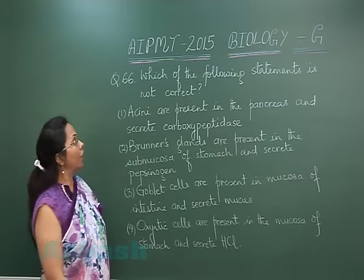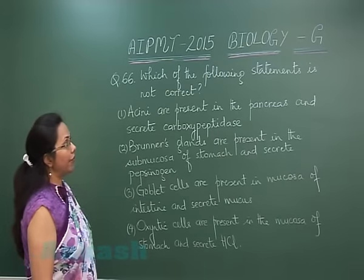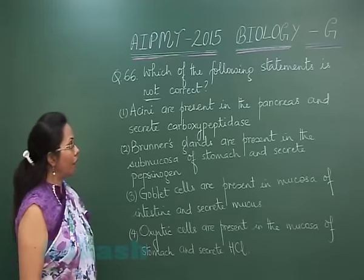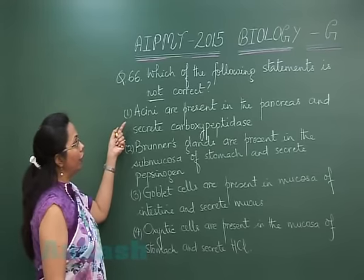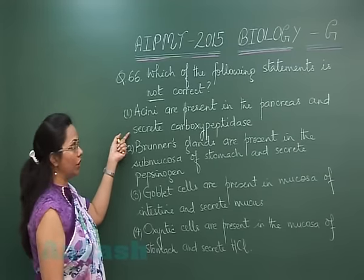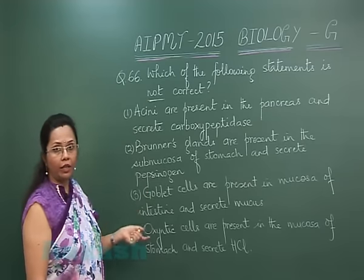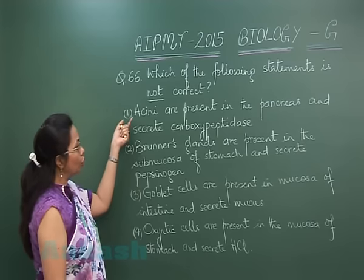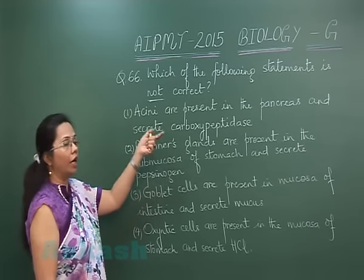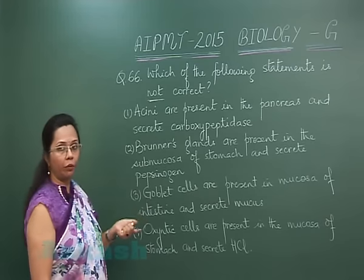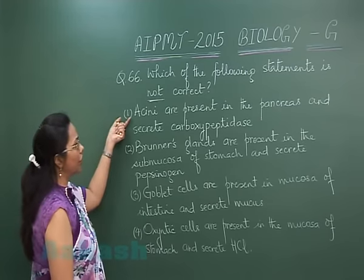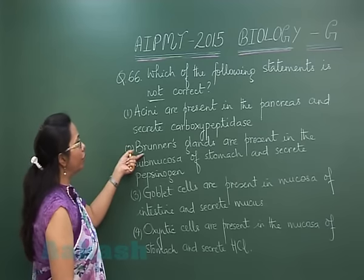Question 66: Which of the following statements is not correct? Option 1: Acini are present in the pancreas and secrete carboxypeptidase. Pancreatic exocrine glands are acinar and they secrete carboxypeptidase in the inactive form, that is pro-carboxypeptidase, along with trypsinogen and chymotrypsinogen. So this is a correct statement.